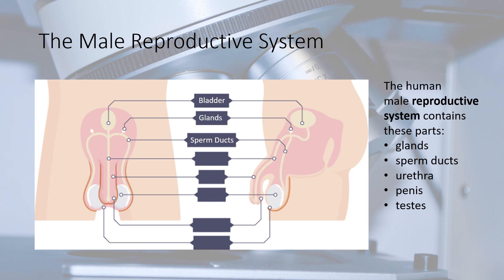Glands and sperm ducts: the sperm pass through the sperm ducts and mix with fluids produced by the glands. These fluids provide the sperm cells with nutrients. The mixture of sperm and fluids is called semen.